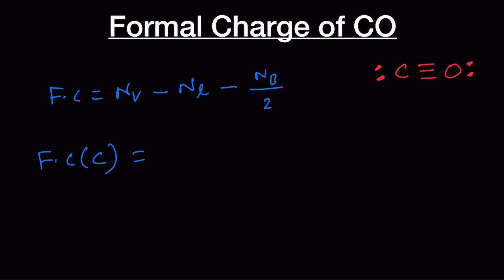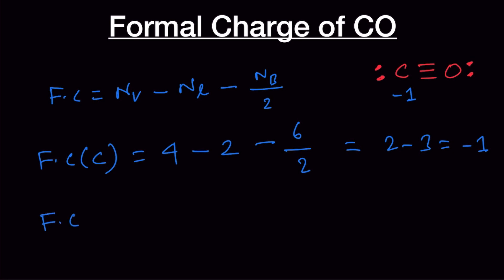The formal charge for carbon equals 4 valence electrons minus 2 (one lone pair) minus 6 divided by 2 (three bonds), which gives 4 minus 2 minus 3, equal to minus 1. So carbon carries a minus 1 formal charge in carbon monoxide.